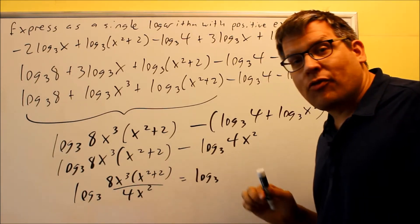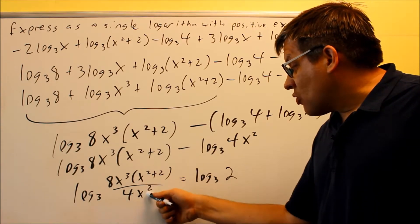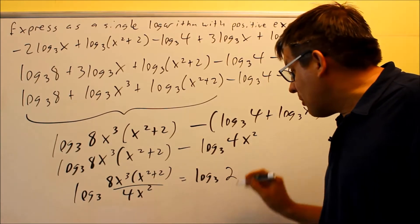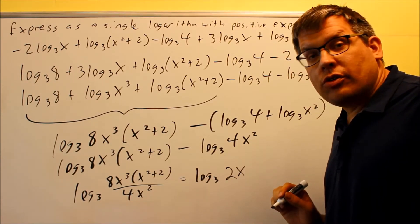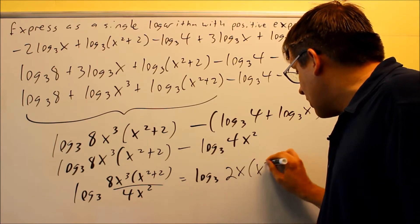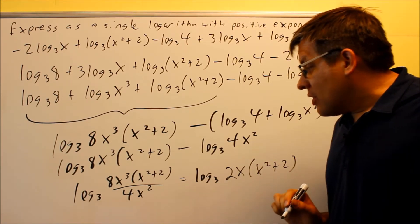If you take 8 divided by 4, that's 2. And then x squared, and there's three of them on top, that means there'll be one x left over when you take that out. And then we have x² + 2.